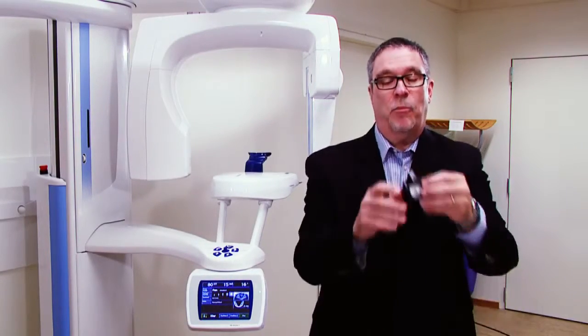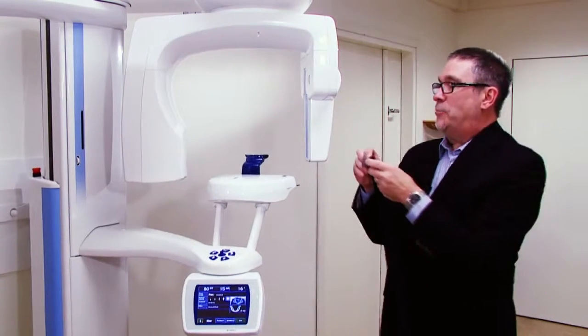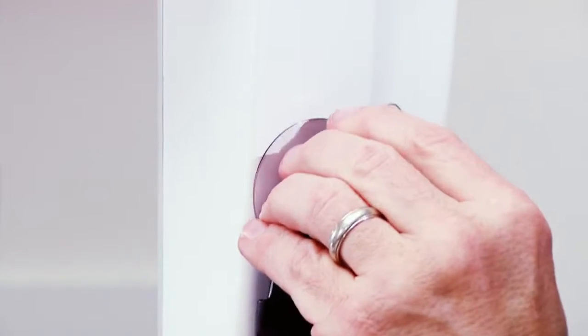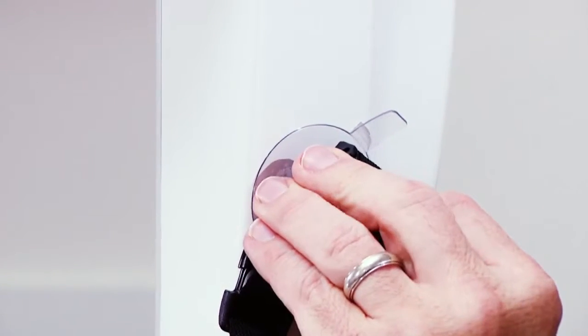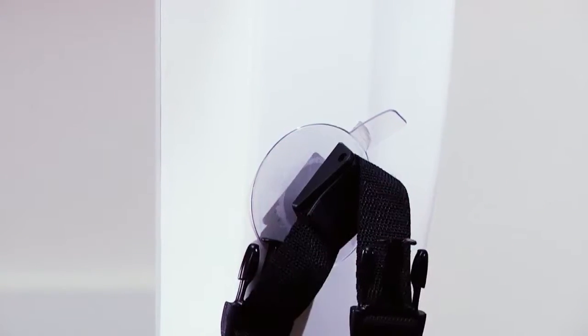You then take the suction cup portion of the holder, and you place it on the back side of the panoramic dental unit, anywhere where there's a flat surface, and simply press it into position.